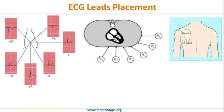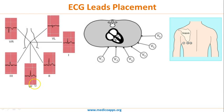Now moving on to the limb leads — again there are six different vantage points. aVR records electrical activity from the right side, aVL records from the left side, and aVF records from the inferior side of the heart. Any inferior infarct will show in aVF. Lead I records from the lateral aspect, and leads II and III record from the inferior part of the heart.